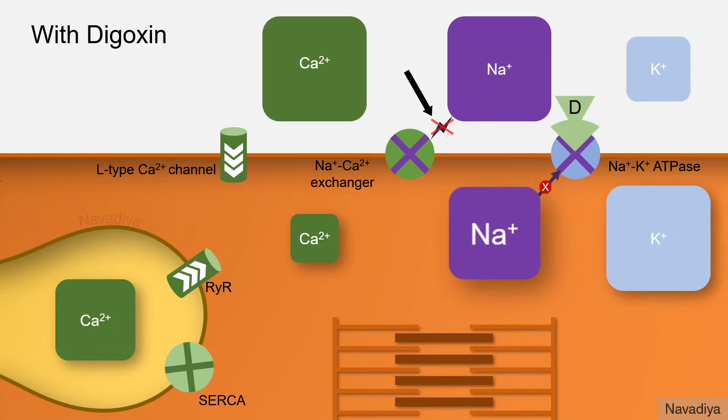This abolishes the concentration gradient of sodium across the membrane that was driving this exchanger. So eventually this exchanger also stops working. As a result, this exit route is no more available for cytoplasmic calcium.